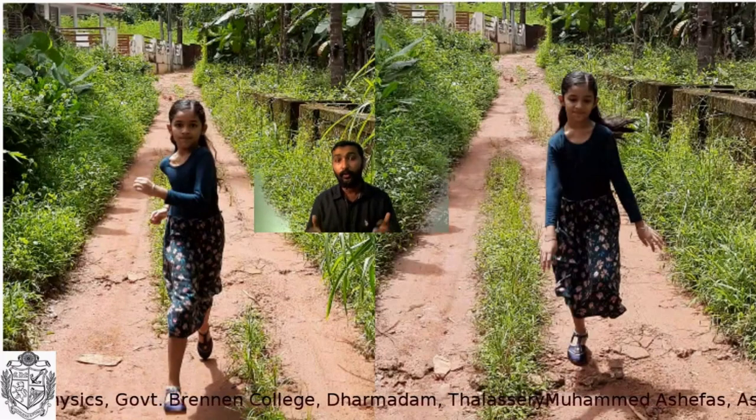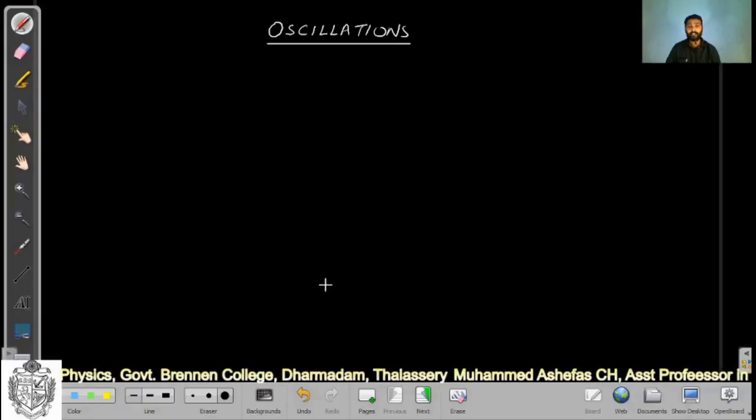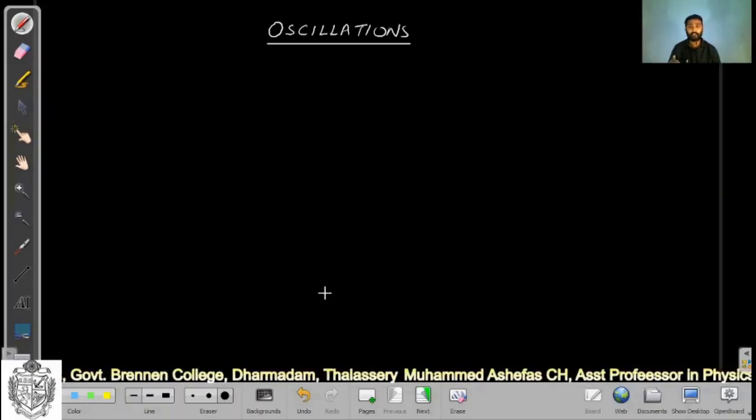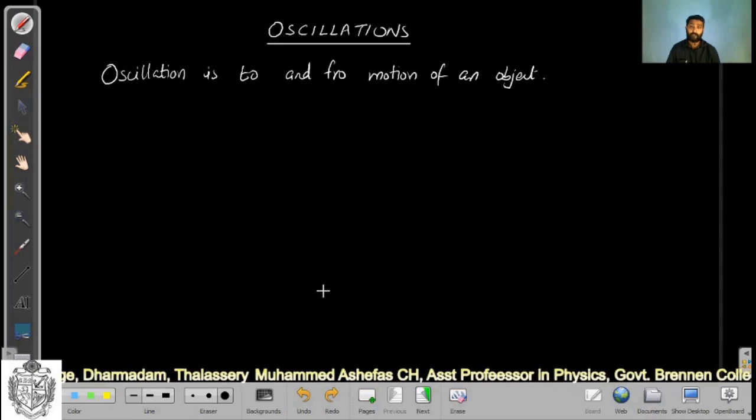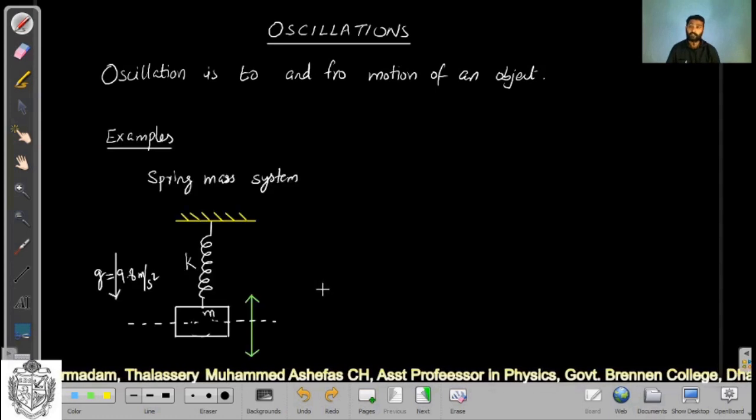What is an oscillation? Oscillation is one of the simplest phenomena in physics - it's just the to and fro motion of an object. We can discuss with an example.